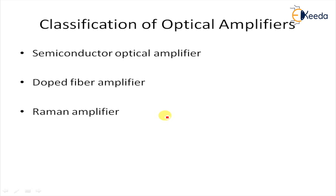The third type is the Raman Amplifier, or Raman Optical Amplifier. It is based on stimulated Raman scattering, which gives it its name for signal amplification. It requires a standard transmission fiber cable. In conclusion, the optical amplifier finds wide application for the transmission of optical signals over distances of several kilometers.